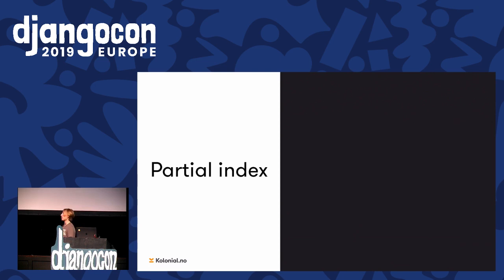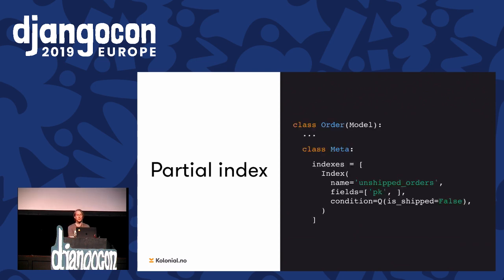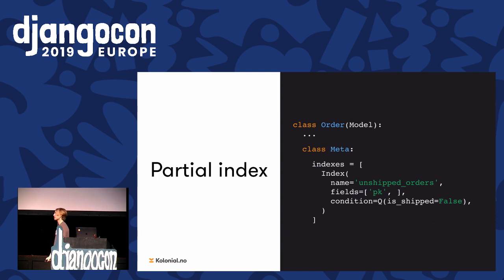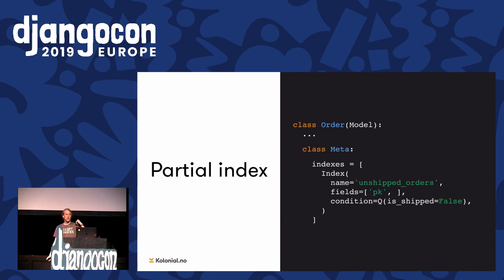And then we have partial indexes. In Postgres, this is actually basically the same as partial constraints, except it doesn't limit you. It can help speed up some queries. If you have a table with a lot of null values you don't want in your index, you can specify a condition to only index non-null values. Or in this case, just index the unshipped orders — those are the ones most often accessed, so we want queries on that to be fast.